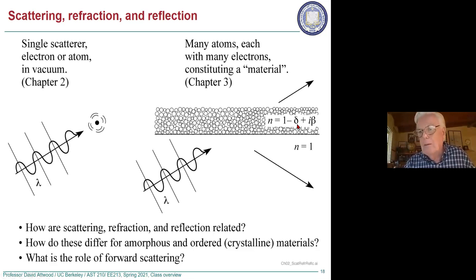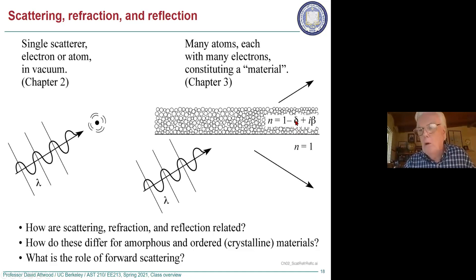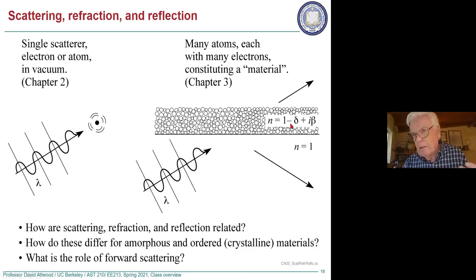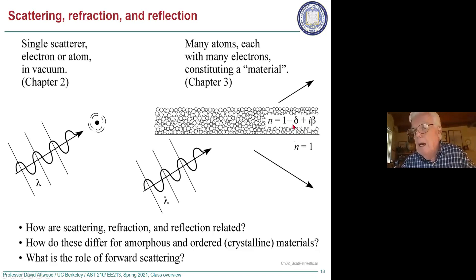With all the different electrons and transition possibilities, it's just way too much to write all the time, so we abbreviate it as delta and beta. We'll talk about why delta is small and why this sign is negative — why for green light, red light, or near ultraviolet this would be 1.5 or something like that, and even bigger in the infrared.